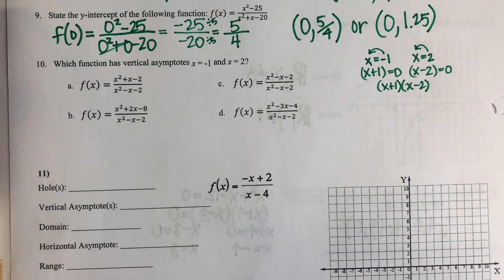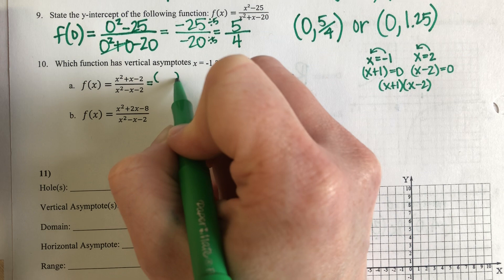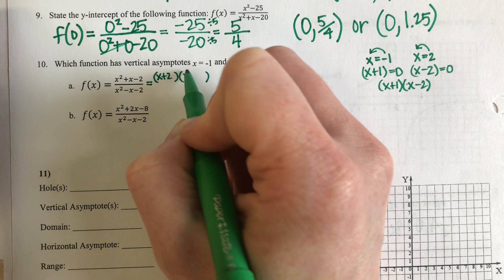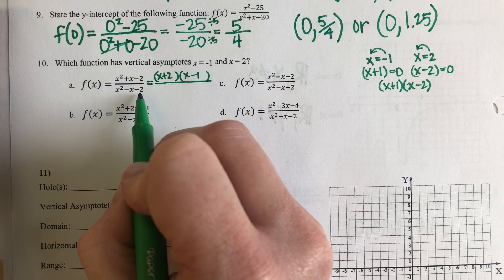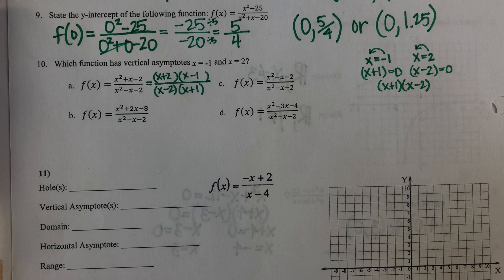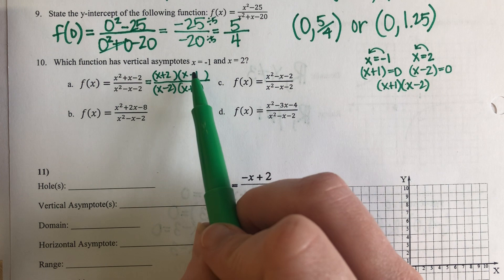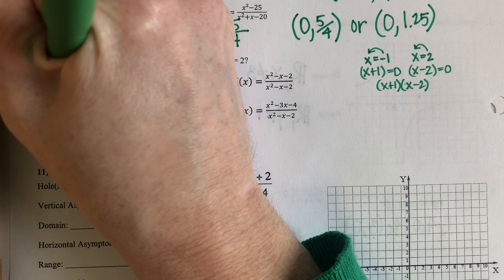Let's start with answer choice A. On the very top, the factors of negative two that add up to give me positive one are positive two and negative one. And then this bottom expression factors into X minus two and X plus one. That looks very much like what I said I needed to find. I need to check and make sure that nothing cancels out — there is nothing on the top or the bottom that looks exactly the same. So I do know that this function will give me what I need.